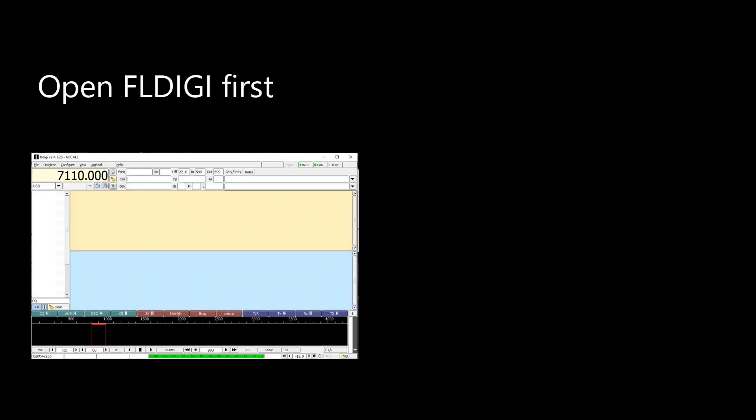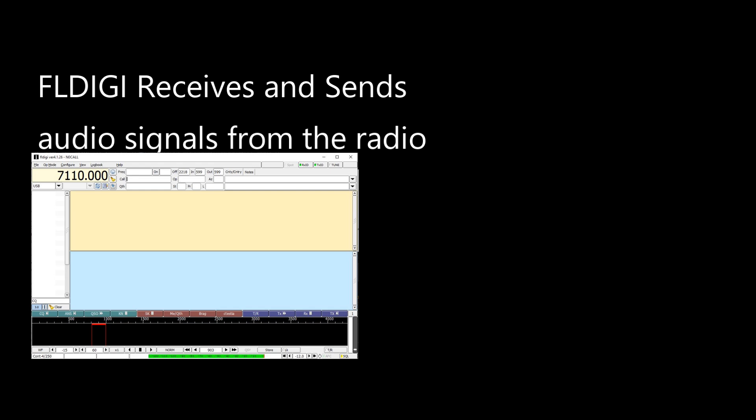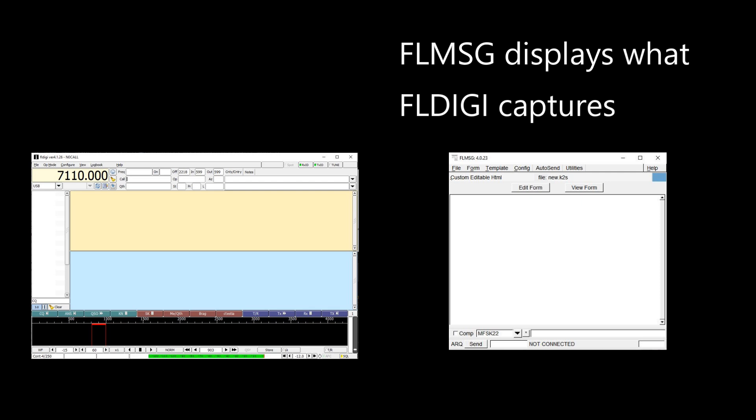You can open FL Message as a standalone program when filling out a report or reading received traffic, but it's always a good habit to open FL Digi first. Develop the habit of opening FL Digi first and then FL Message. The reason is that FL Digi is what captures or sends the audio. If you only have FL Message open when receiving a message signal, whatever was sent won't be captured — that's the role FL Digi plays. FL Message only displays captured data in the pre-formatted forms and saves them. This is especially true for FLAMP, which we'll cover in the next video — it will not function without FL Digi being opened first.